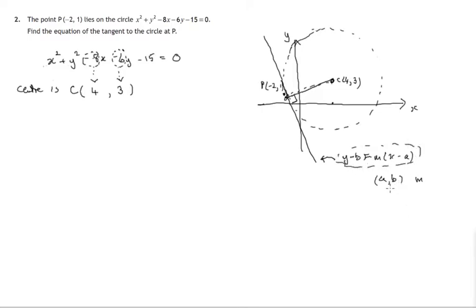So we certainly know a point on the tangent. That's the point negative 2, 1. We need to find the gradient. So there's our first task. And finding the gradient of this tangent, we can't find it directly. We have to look at the gradient of this radius and then the gradient of the tangent is perpendicular to that.